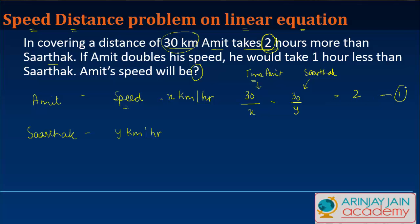So 30/x minus 30/y equals 2. Let's call this Equation 1. Now, if Amit doubles his speed to 2x, with the distance remaining the same, he would take one hour less than Sartak. So the time Amit takes at speed 2x is 30/2x.